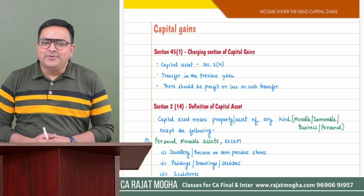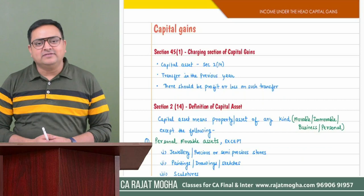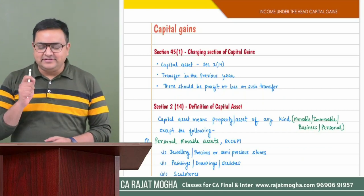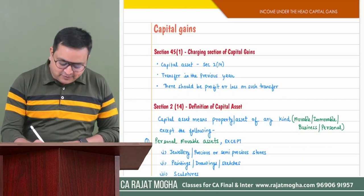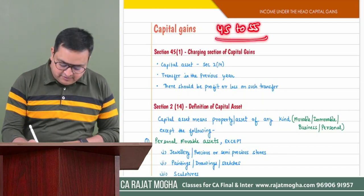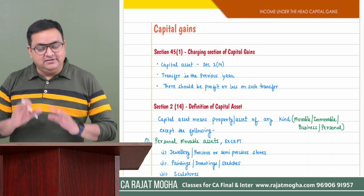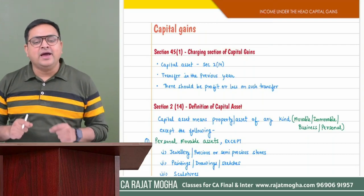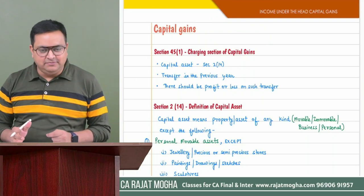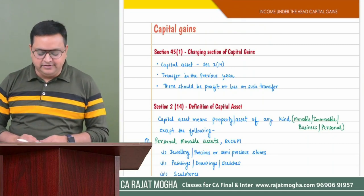Hi everyone, hope you're all doing great. Today we are starting with another important chapter — Capital Gains. The sections in capital gains start from section 45 till 55. We will be discussing all these sections today. It's a very easy and interesting chapter, and equally important like PGBP, so capital gain is one of the important chapters in our syllabus.